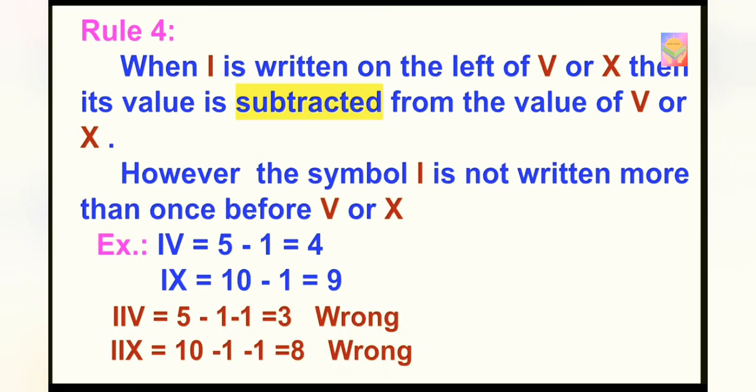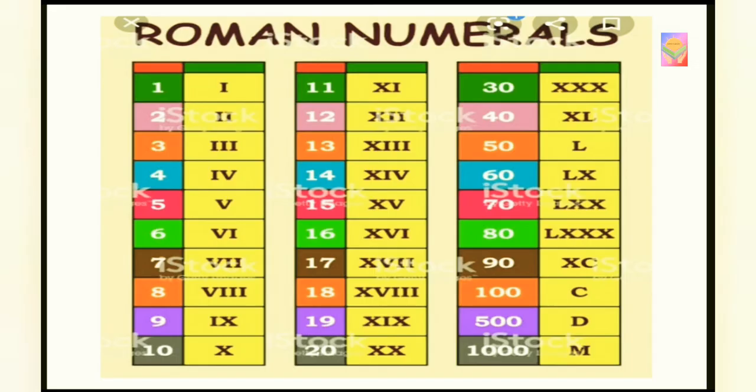It means, if you write I 2 times before V, it will become wrong. Similarly, for X. So student, before you write Roman numeral, you should know this all 4 rules. So children, if you know the symbols used to write Roman numerals and if you know the rules, then it is easy to write Roman numerals.